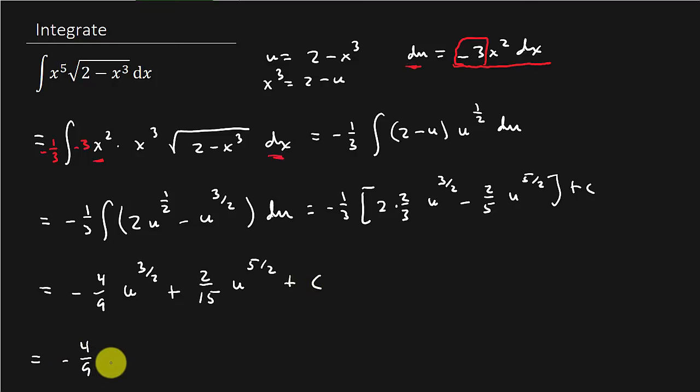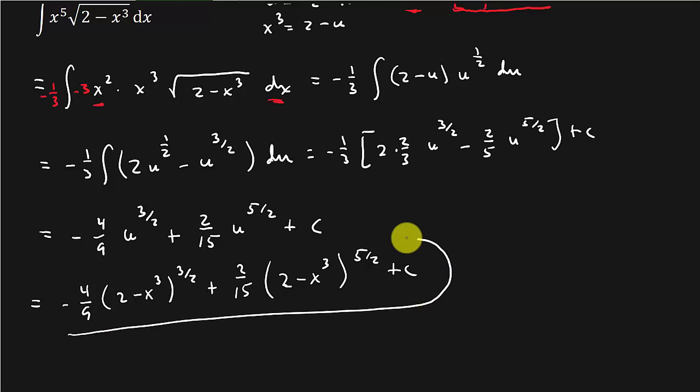And so this is negative 4 ninths, and in the place of u, I've got to put 2 minus x cubed. So 2 minus x cubed to the 3 halves plus 2 over 15. I'm just getting everything back in terms of x, and that's to the 5 halves plus c. And this would be your answer.